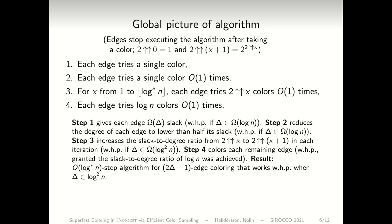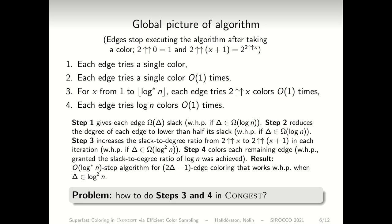Unfortunately, it's not clear how you would do steps three and four in CONGEST, contrary to LOCAL. Because in steps three and four, each edge tries up to log n colours in a round. Communicating log n colours naively takes log n times log delta bits — so at least log delta rounds. So how do you overcome this?